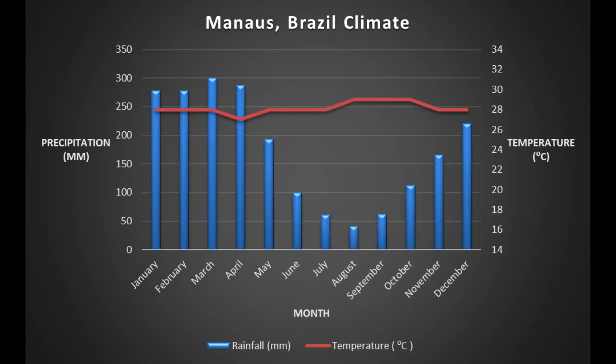If we look at this climate graph from Manaus in Brazil, this can be our first example. We've got two types of data on there — the temperature labeled with the red line, and the rainfall or precipitation shown by the blue bars. This is a very common way of displaying climate data, so you need to become familiar because you're going to see these throughout studying geography at school.